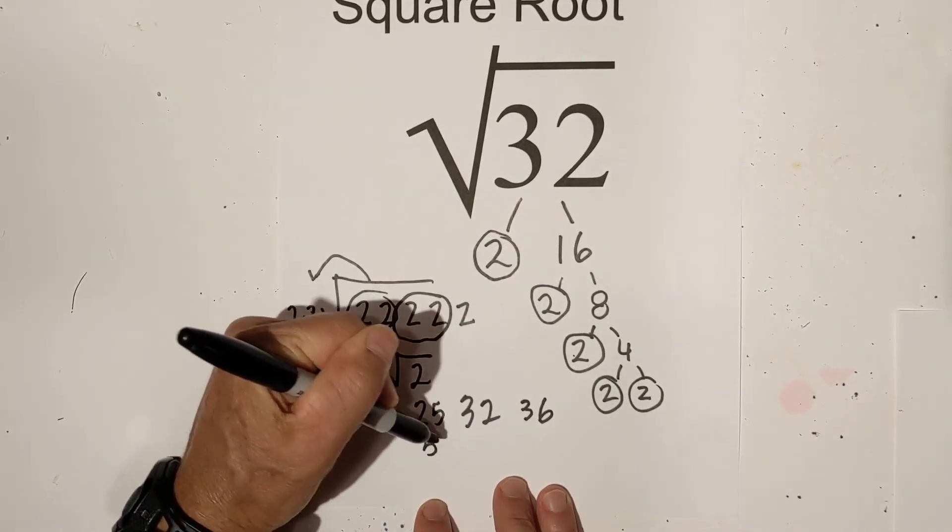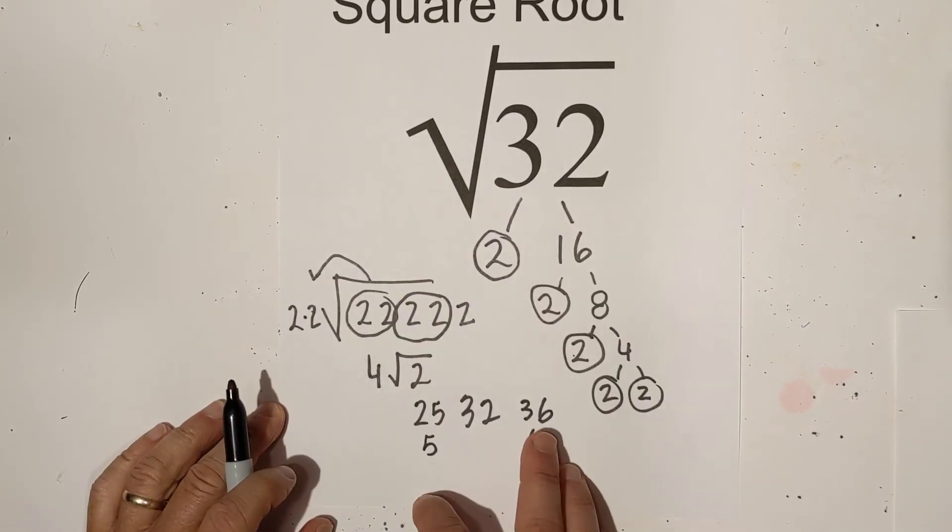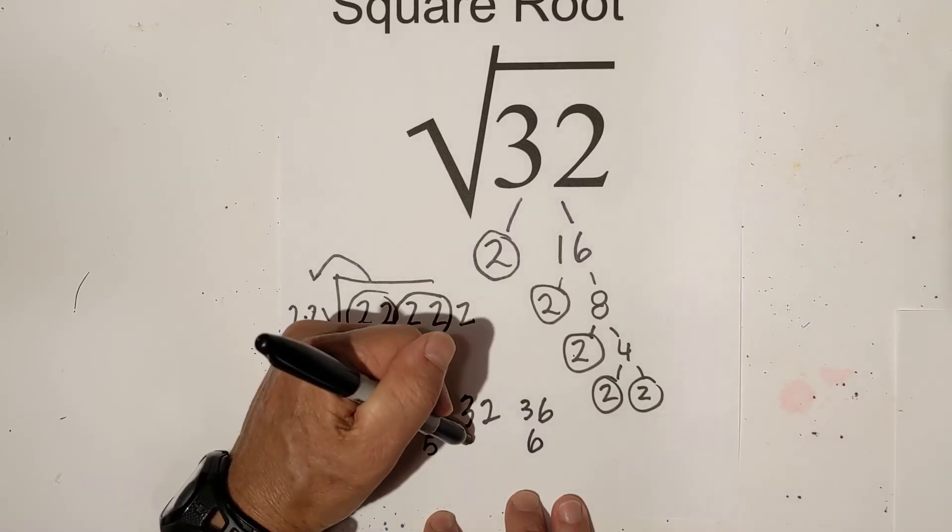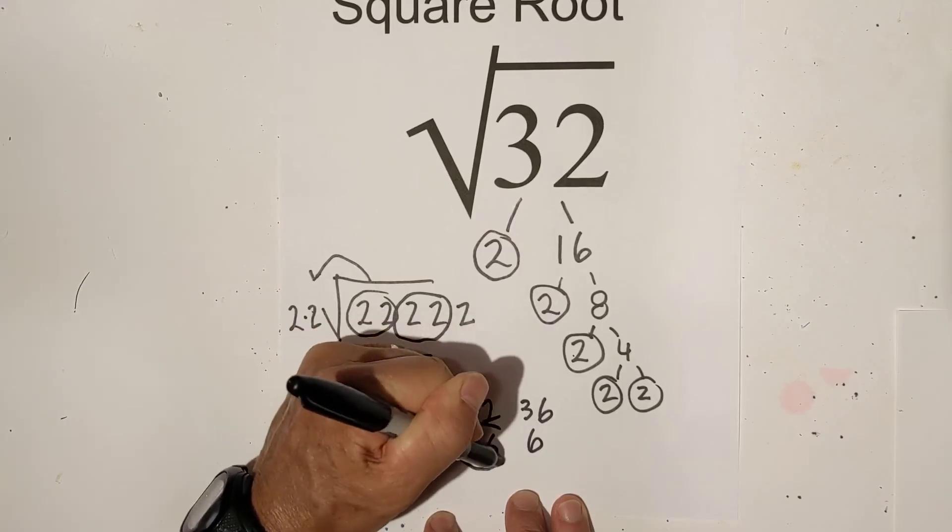Okay, 25 is 5 times 5, 36 is 6 times 6. Well, it's much closer to 36. So I would estimate it to be about 5.6 or 7. That's an easy way to estimate it.